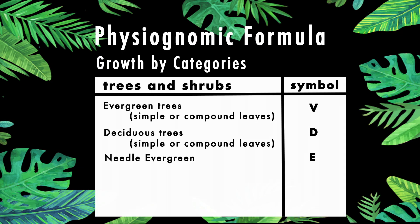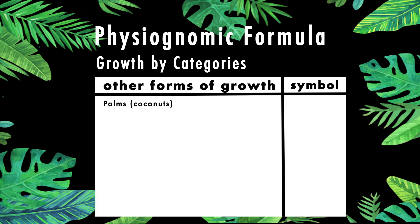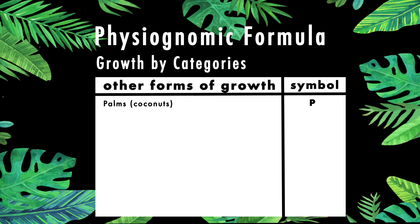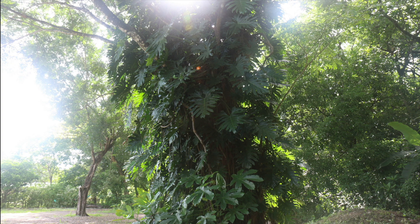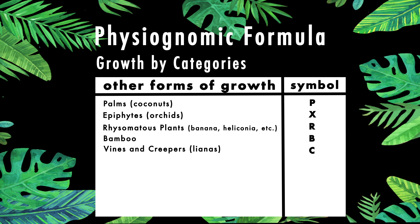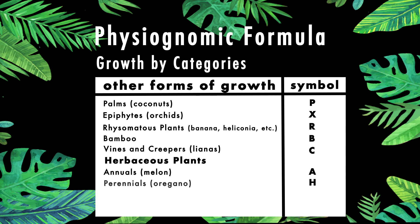These are followed by categories of needles and of fillies. We also have other forms of growth. For palms, we use the symbol P — an example is the coconut palm. For epiphytes, we use the symbol X — an example is the Swiss cheese plant, Monstera deliciosa. Other categories include rhizomatous plants such as ginger, plantain, and banana; bamboos; vines and creepers or lianas; annual herbaceous plants such as melon; perennial herbaceous plants such as oregano; and grasses such as barley.